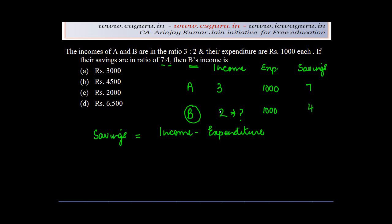are in the ratio of 3 is to 2. We can say A's income is 3x and B's income is 2x. So what will be the savings? The savings of A upon B, which